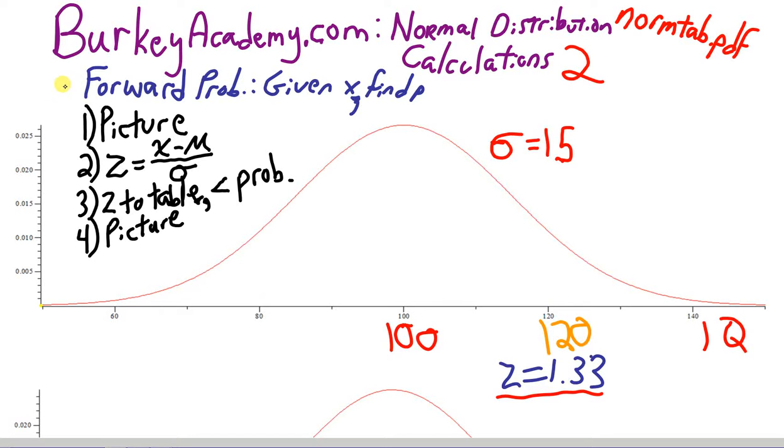We're going to work on backward problems, where instead of giving me an IQ and asking for a probability, I want to give you a probability and ask you to find the IQ.